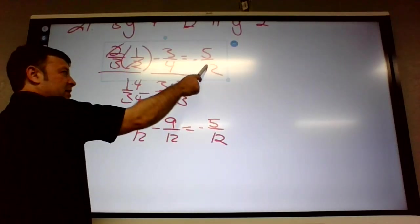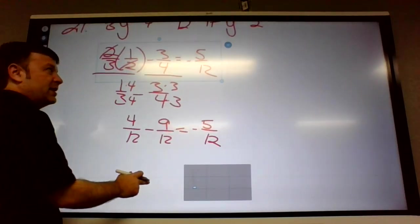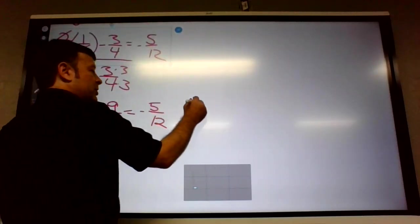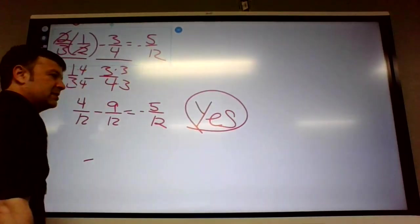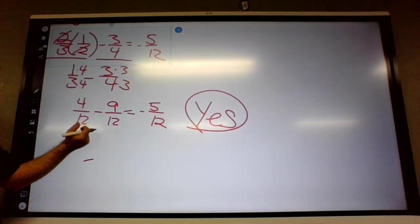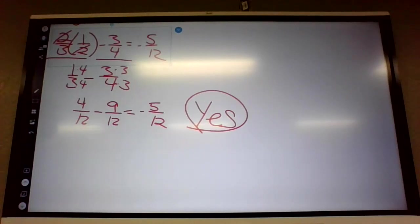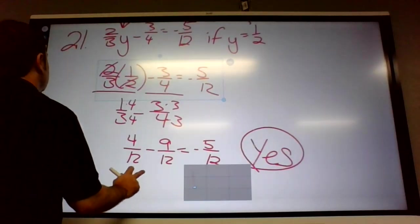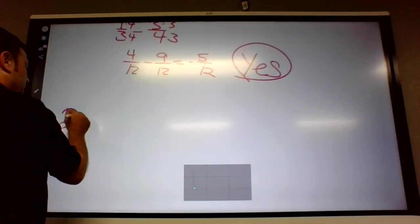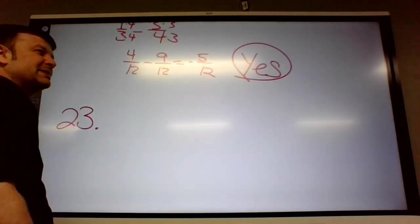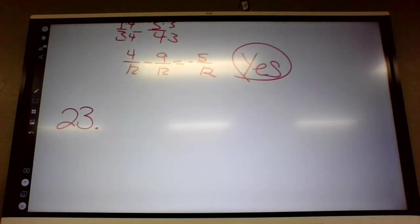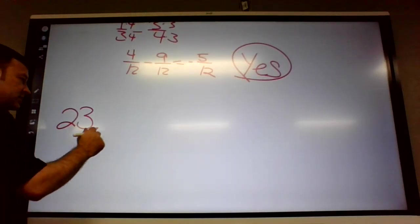You would need a common denominator of twelve. I did that wrong. So multiply by four and that by three. Four-twelfths minus nine-twelfths is negative five-twelfths. So did it work? Yes. That's what it was supposed to be. So yeah, they got the answer right. So we're just supposed to put yes. They did it right. All right. 23 will be our last.